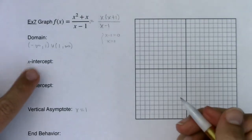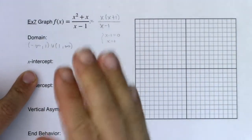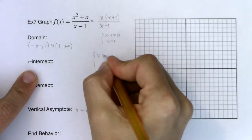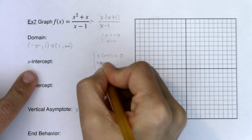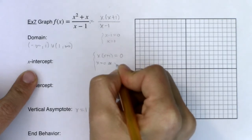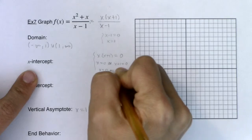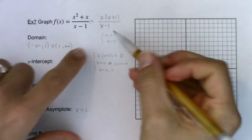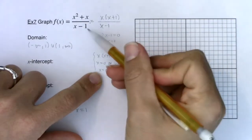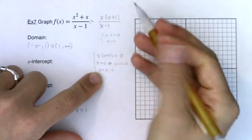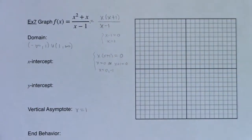Okay for my x-intercepts I want to figure out where my numerator and only my numerator is zero. So my numerator is x times x plus 1 equaling zero so either x is equal to zero or x plus 1 is equal to zero so I get zero or negative 1. And again if I plug zero into the denominator it doesn't zero out, if I plug negative 1 into the denominator it doesn't zero out, so these two numbers zero out only my numerator.